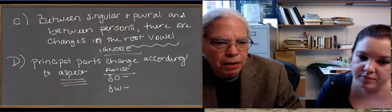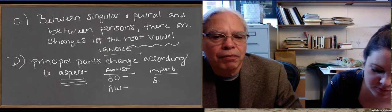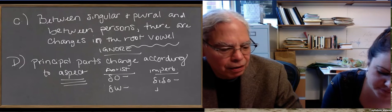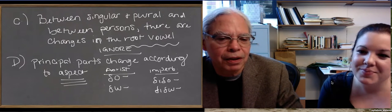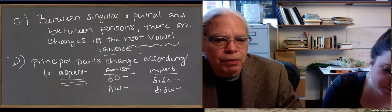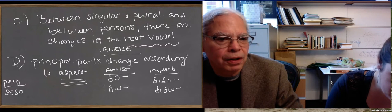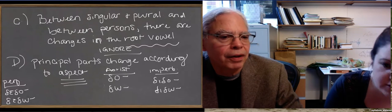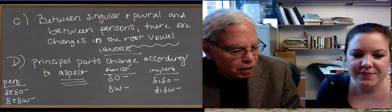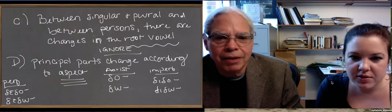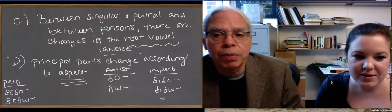In the imperfective aspect, the stem is dido or dido. That is, you have a reduplication, but a reduplication with an iota. Dido or dido. You're also going to see dido, but we're not worrying about those things. And then, in the perfective aspect, you have what you would expect, which is a reduplication with an e. Which is dedo and dedo.